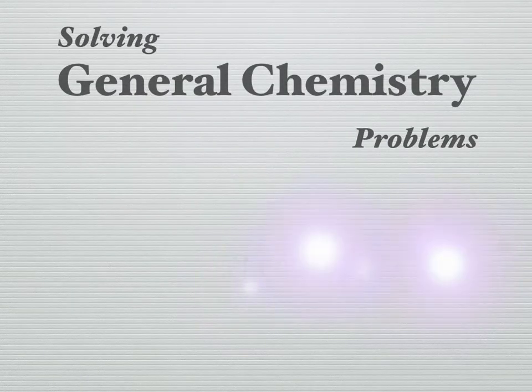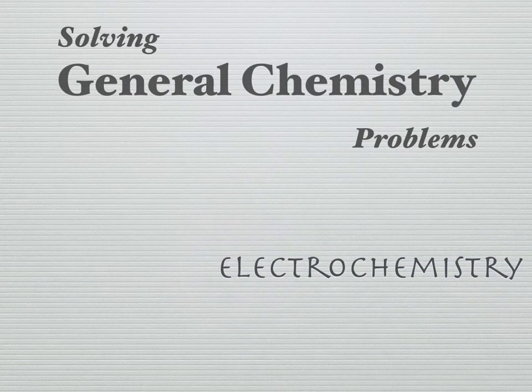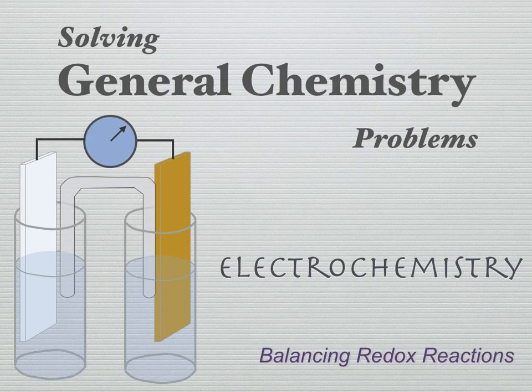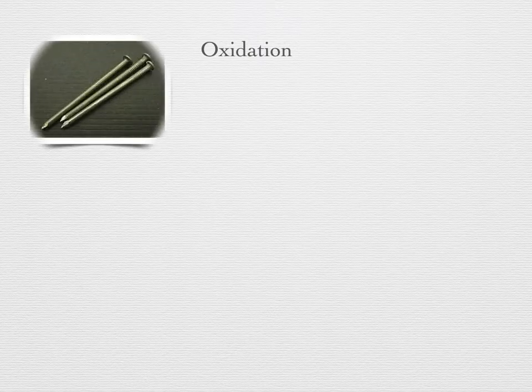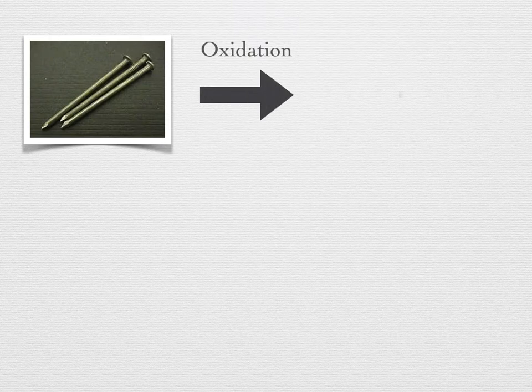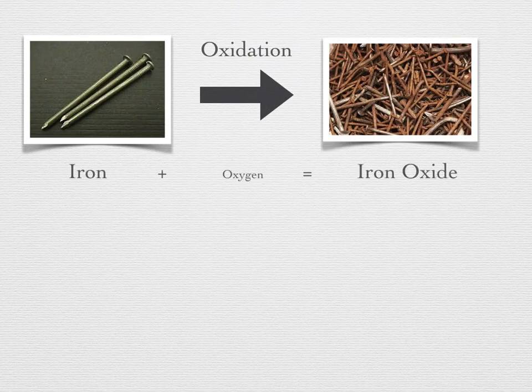Solving General Chemistry Problems: Electrochemistry. A molecular species is said to be oxidized when the atoms involved give up some of their electrons. The term 'oxidized' goes back to the early days of chemistry when scientists recognized the chemical changes that occurred when something such as a metal would react with oxygen.